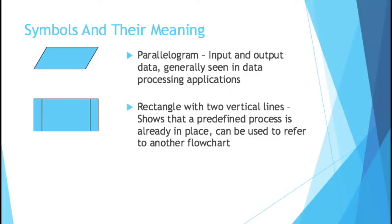You have the rectangle with two vertical lines. This shows that a predefined process is already in place. It can be used to refer to another flowchart.